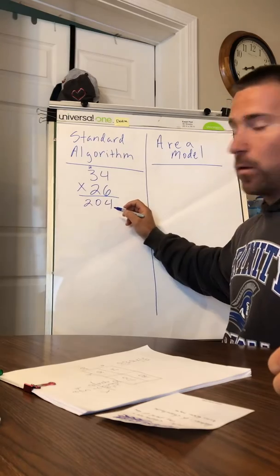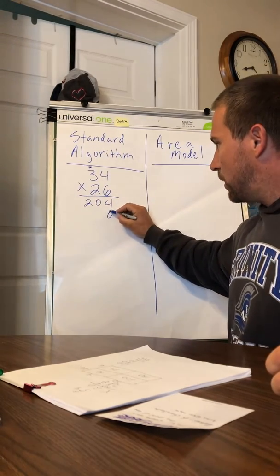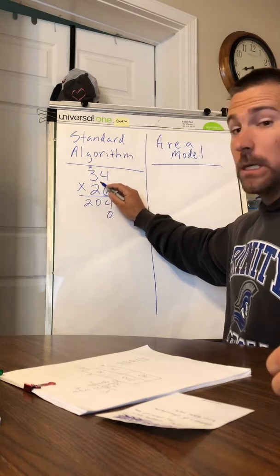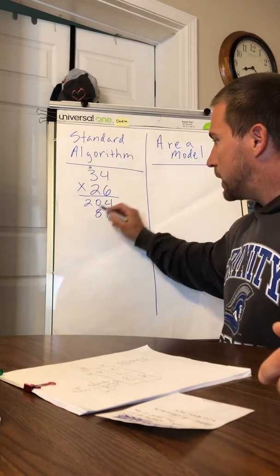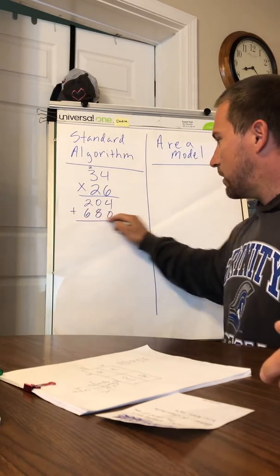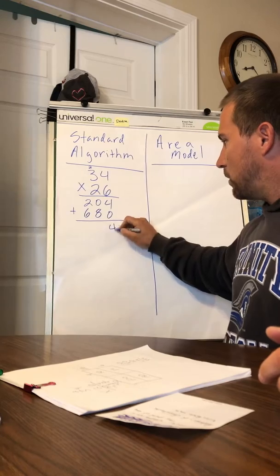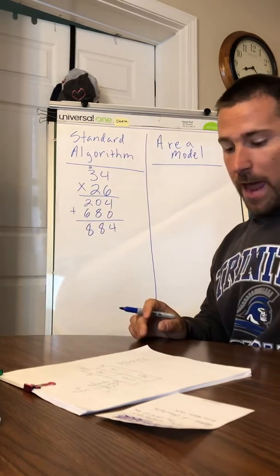So I've got 204. Now since I'm moving over to my tens, I need to put a zero here. And now two times four is eight, and then two times three is six. So here are my two partial products that I'm going to add together. Got four and zero, eight and zero, six and two, so 884.